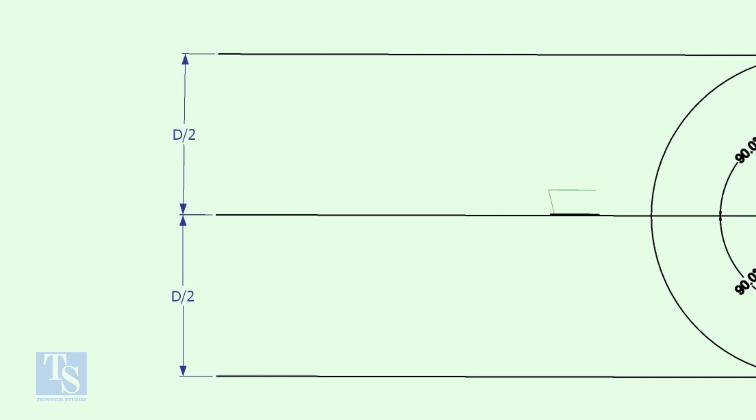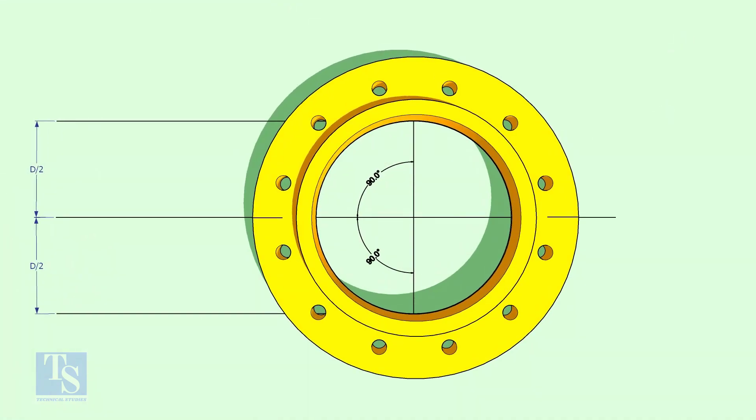Draw two parallel lines as shown. The length of the lines is a little more than the elbow center radius. Put the flange exactly on the circle. Make sure the centerline of the flange and the centerline of the layout are in line.